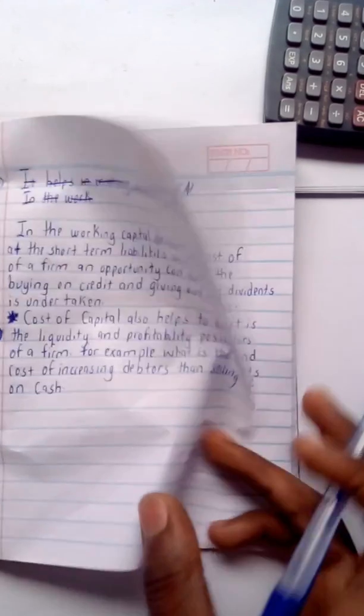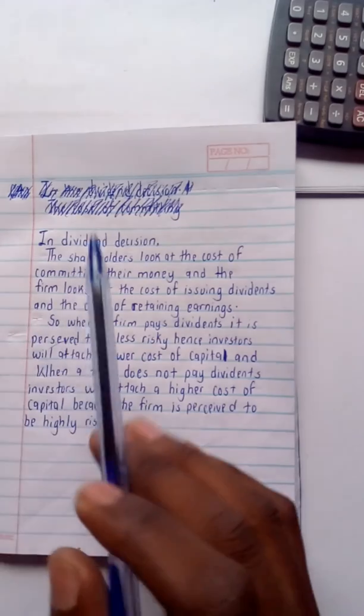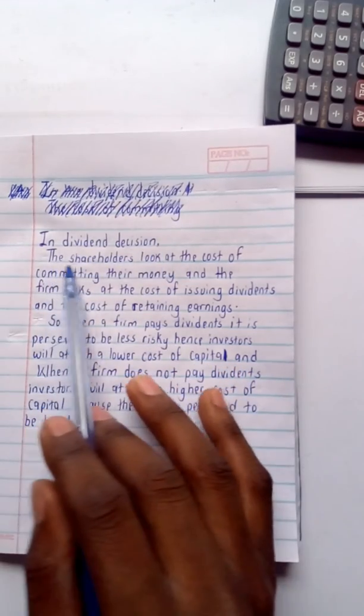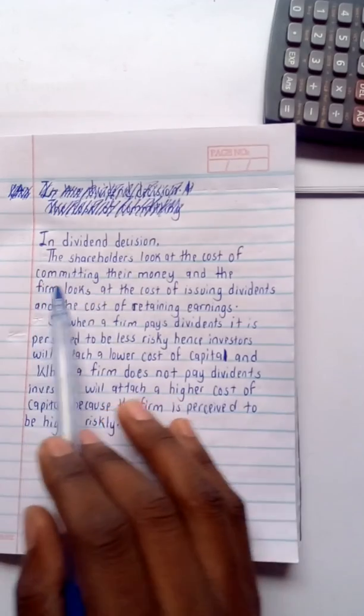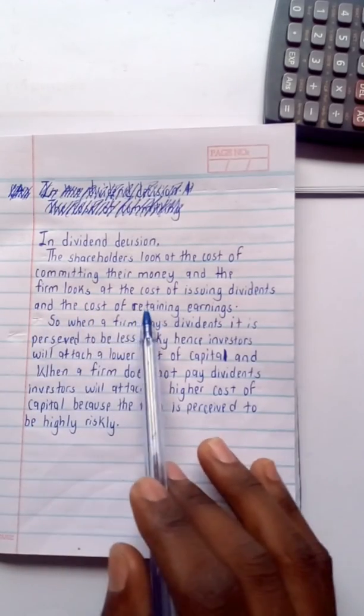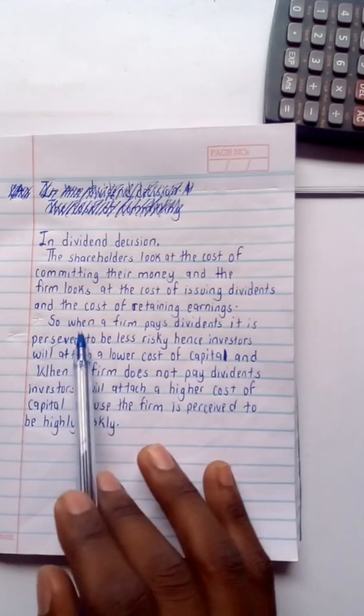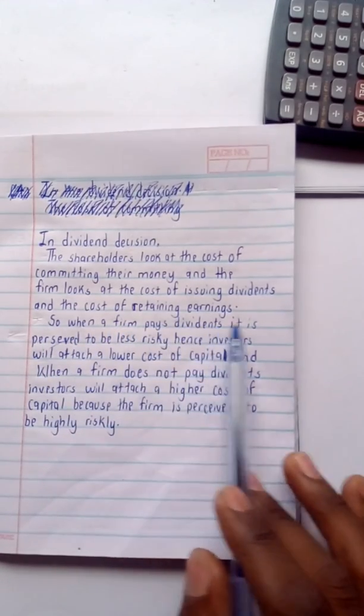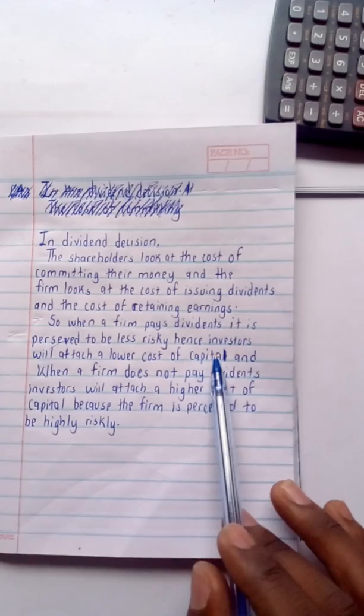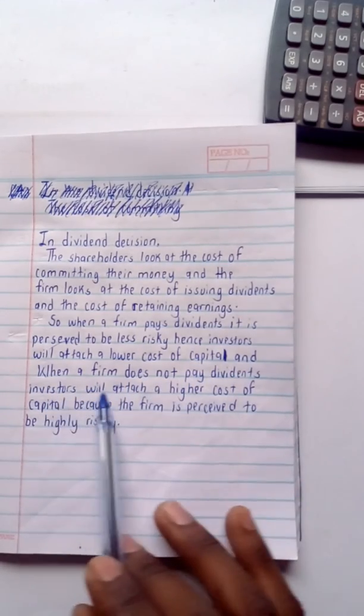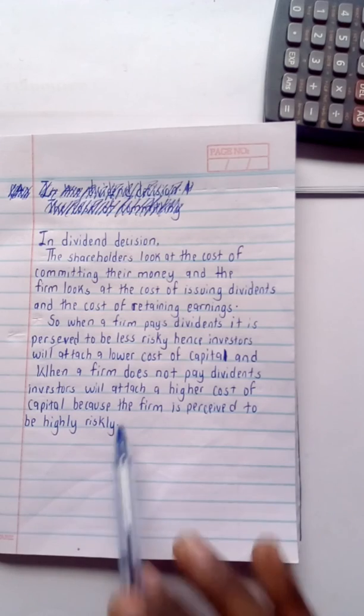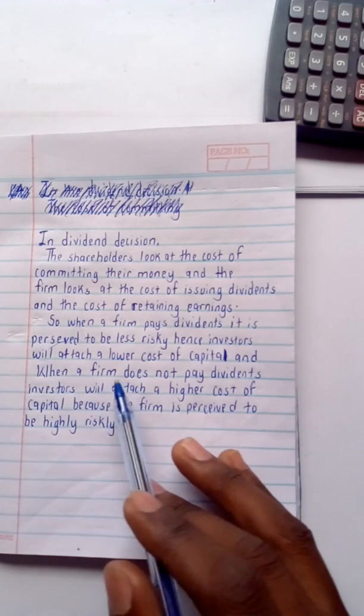The last one will be to do with the dividend decision. Here, the shareholders look at the cost of committing their money, and the firm looks at the cost of issuing dividends and the cost of retaining earnings. So when a firm pays dividends, it is perceived to be less risky, hence investors will attach a lower cost of capital. And when a firm does not pay dividends, investors will attach a higher cost of capital because the firm is perceived to be highly risky.